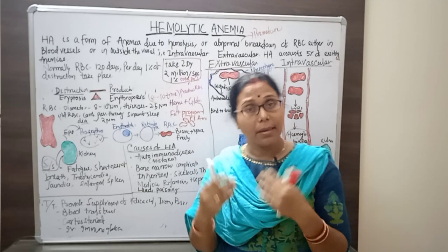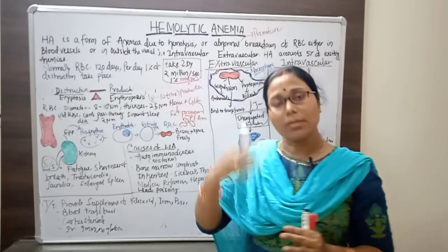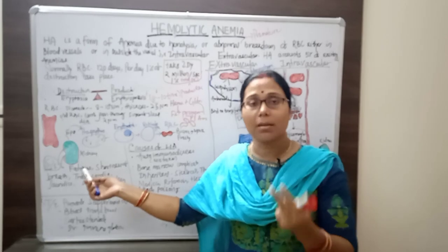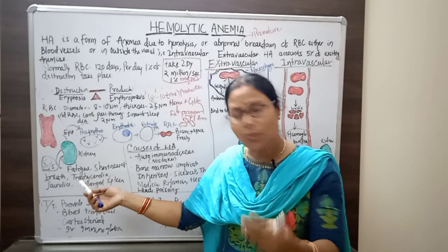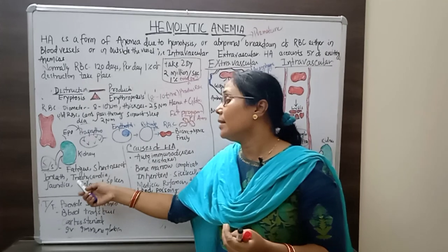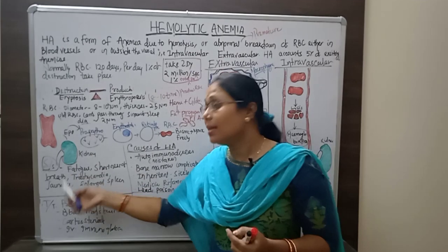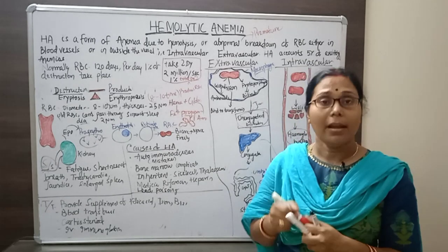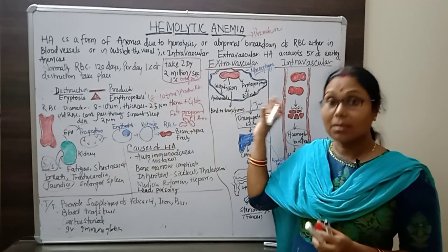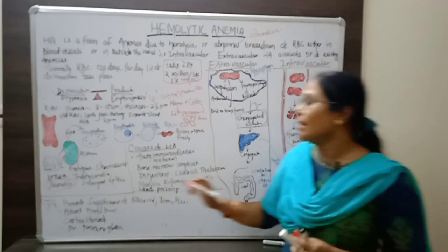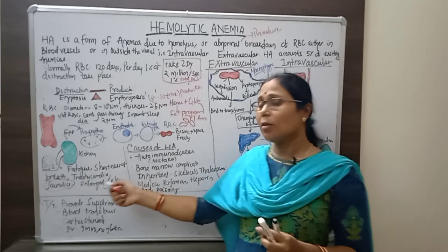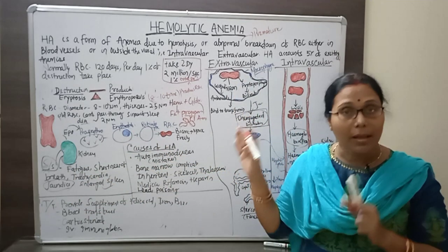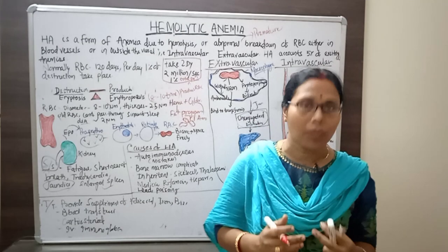When RBCs are lost, the hemoglobin level decreases and an anemic condition develops. Clinical features include fatigue due to insufficient oxygen to tissues, shortness of breath (dyspnea), and tachycardia — an increased heart rate. A feature particularly characteristic of hemolytic anemia is jaundice — yellow coloration of the sclera, nails, and skin. An enlarged spleen may also be found on examination.